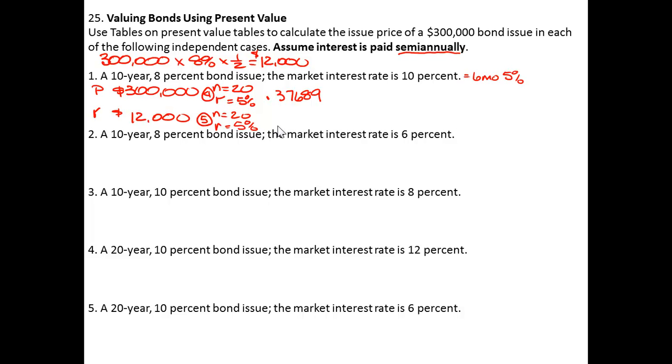I'm going to multiply $300,000 times 0.37689 and I find the present value of $300,000 in today's terms is $113,067. Finding 20 payments of $12,000 in terms of its present value is $12,000 times 12.46221 which is $149,547.